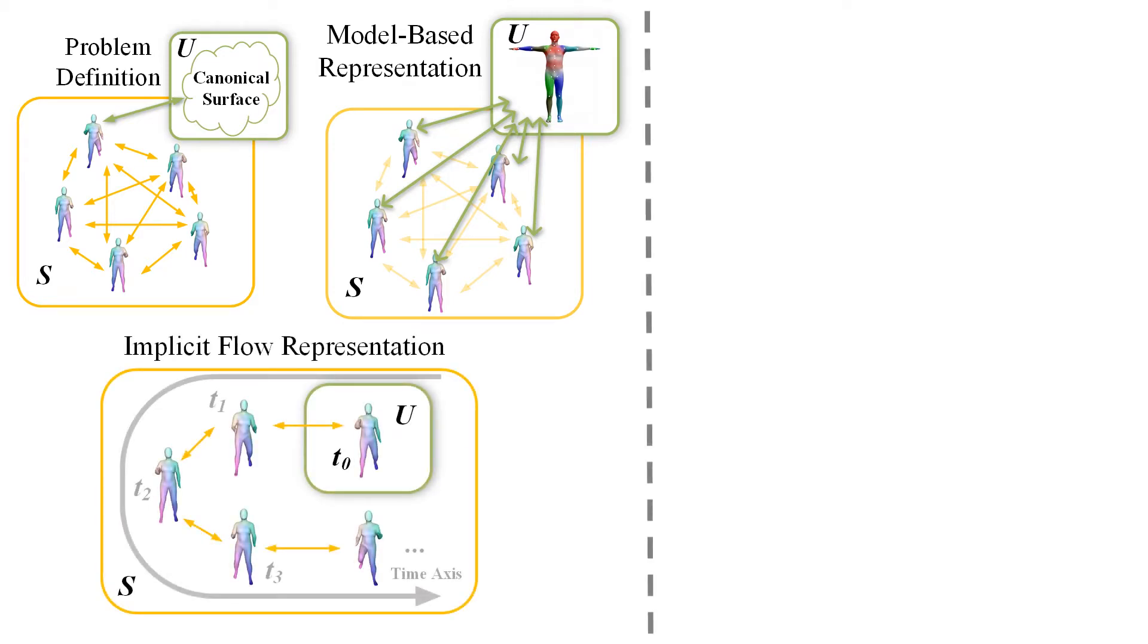On the contrary, recent implicit flow representations make no assumption of the models. They represent the shape in the first frame of a sequence as the reference shape by 3D implicit field and model the space deformation to the future frames by neural ODE or MLP.